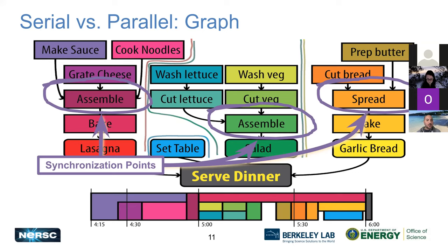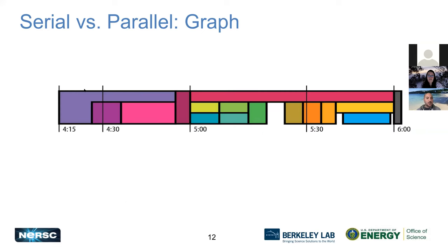This dependency graph concept, maybe overkill for a lasagna dinner, is the same concept used when evaluating and parallelizing an algorithm. Here's a timeline for a 6 PM dinner: working backward, I have to start simmering sauce at 4:15. All the lasagna subtasks — sauce, grating cheese, cooking noodles — feed into assembly, then baking. While the lasagna bakes, I make the salad and garlic bread, set the table, and dinner is ready at six.